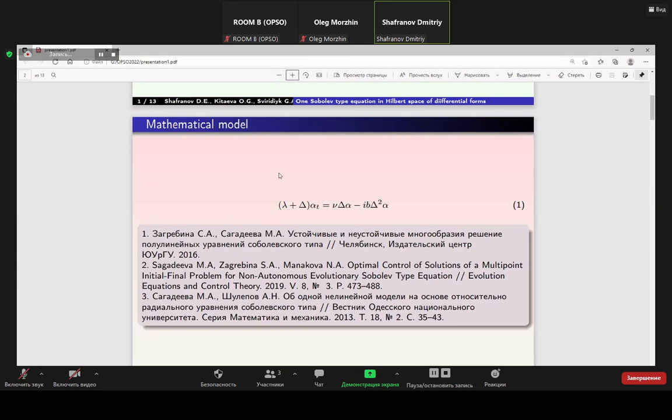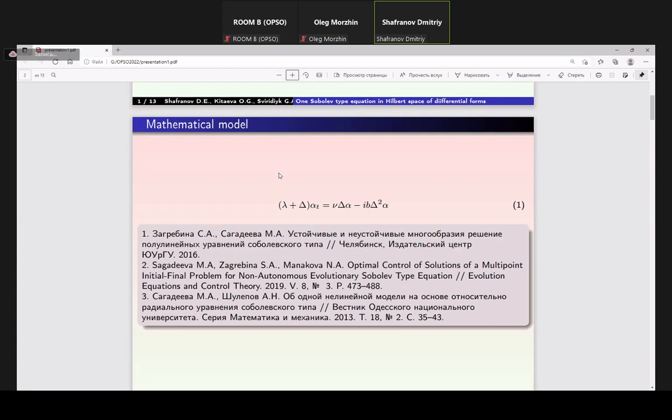That is the linear generalized Ginzburg-Landau equation one, where the coefficient lambda, nu, and b describe system parameters and i is the imaginary unit. We consider equation one on a d-dimensional compact oriented Riemannian smooth manifold M without boundary. Here delta is the Laplace-Beltrami operator and alpha is a k-form with coefficients depending on t, on time. We use that model because we find it in work of Zagadayeva, Zagrebina, Shulepov.